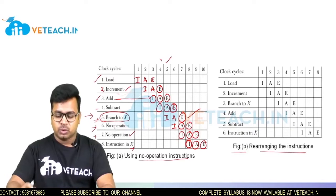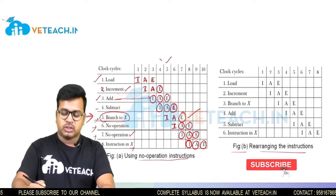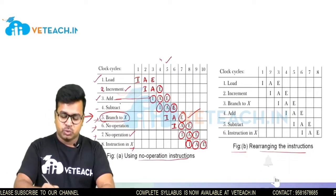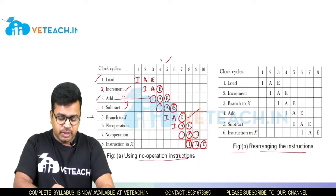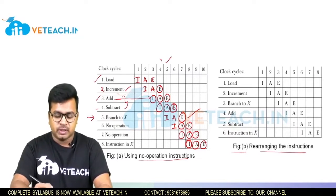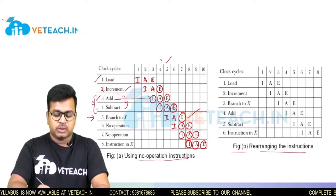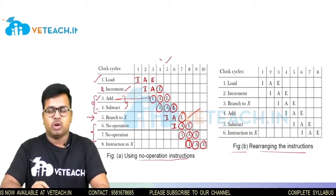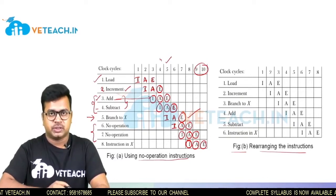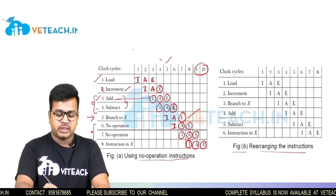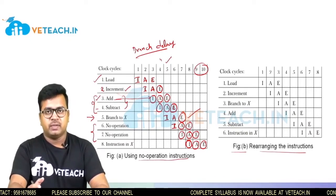The problem with the first table is at the branch-to-X instruction: two NOPs are inserted, adding two extra clock cycles. This is the branch delay problem — the pipeline requires 10 clock cycles total because of those two NOP insertions. To avoid this, we have another technique shown in the second table.